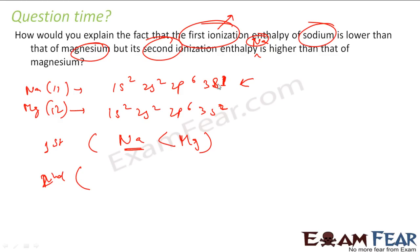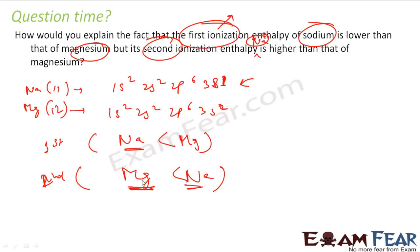Now for second ionization enthalpy: if sodium loses two electrons, it becomes 2p5, which is highly unstable. But if magnesium loses two electrons, it becomes very stable. So sodium will not want to lose two electrons. That's why sodium will have higher second ionization enthalpy compared to magnesium. Magnesium is happy to lose two electrons to become stable, so it has a small second ionization enthalpy.